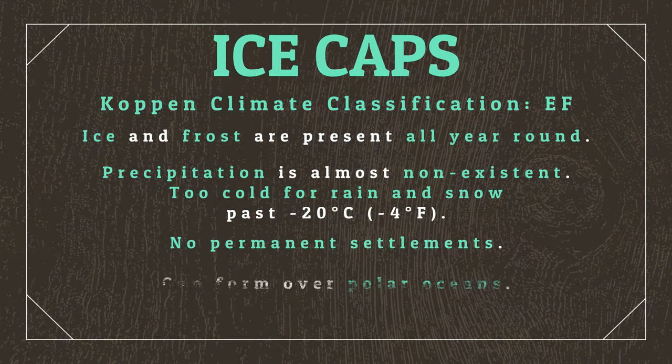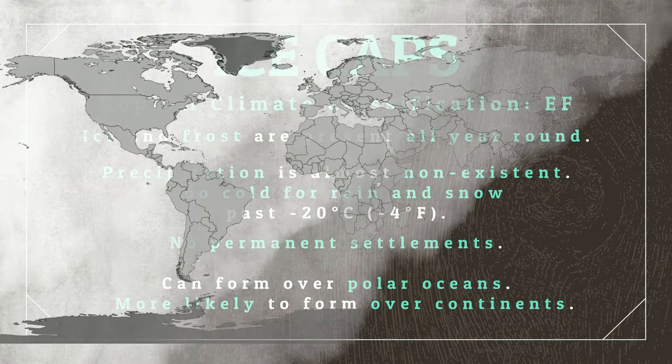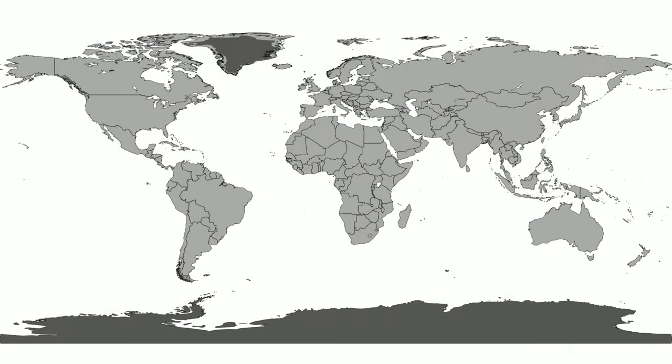True to their name, ice cap climates are also present in areas of the polar ocean that are frozen over, either permanently or seasonally. However, the moderating presence of the ocean means that ice caps are overwhelmingly more likely to form across polar continental areas. And so on Earth, our southern polar ice cap is far more expansive and frigid due to the Antarctic continent, when compared to the northern ice cap that forms over the Arctic Sea.